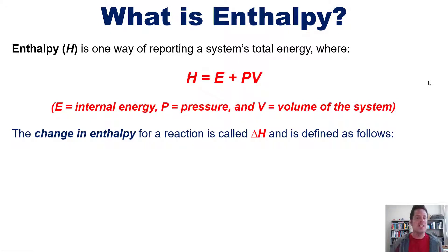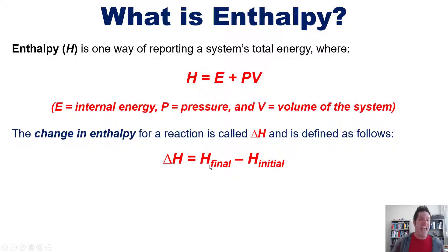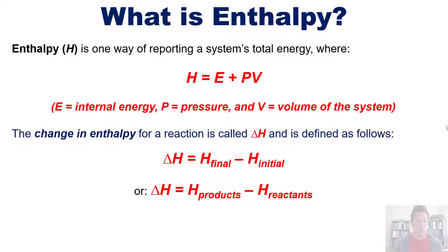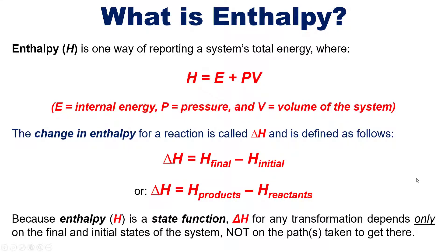The change in enthalpy for a reaction is called delta H and is defined as: delta H equals the enthalpy of the final state minus the enthalpy of the initial state. When applied specifically to a chemical reaction, delta H equals the total enthalpy of the products minus the total enthalpy of the reactants, because the products are the final state and the reactants are the initial state. Because enthalpy H is a state function, delta H for any transformation depends only on the final and initial states of the system — the products and reactants — not on the path or paths taken to get there.